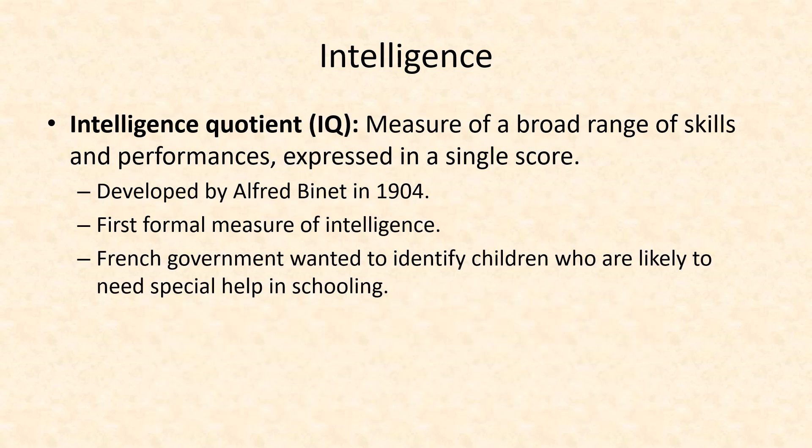Now let's consider the concept of IQ, also known as intelligence quotient. In 1904, French-born Alfred Binet was responding to the French government's desire to identify children in school who were likely to need special help. They were looking to see if they could measure the intelligence and aptitudes of students — what are the possibilities in terms of thinking capacity? Because if we can determine that early, maybe we could plan appropriate interventions in school. So Binet developed the first formal measure of intelligence known as IQ — a measure of a broad range of skills and mental performance, expressed in a single score.